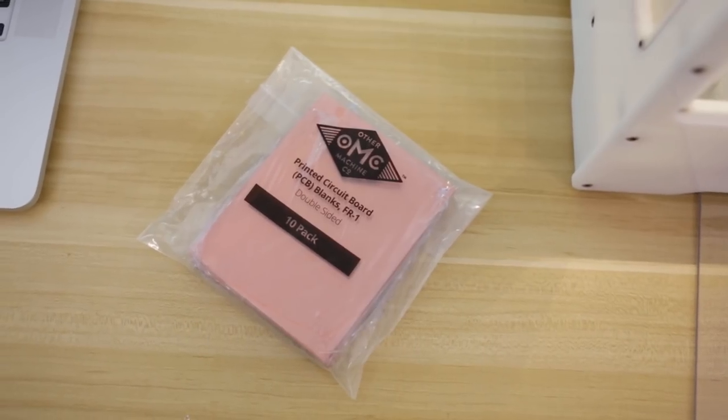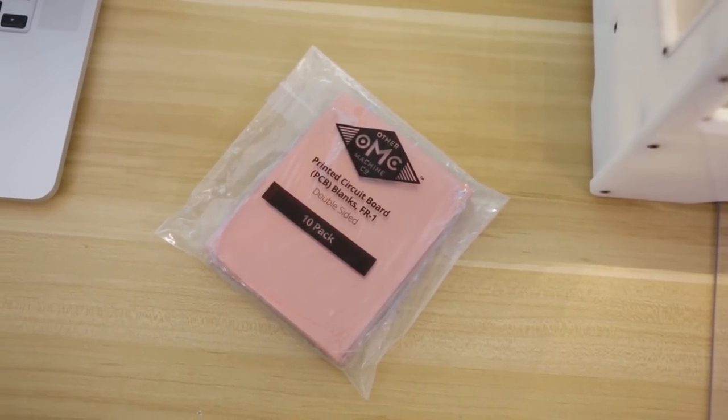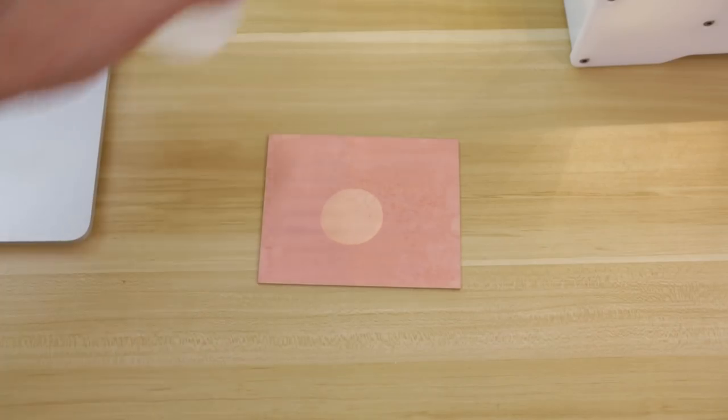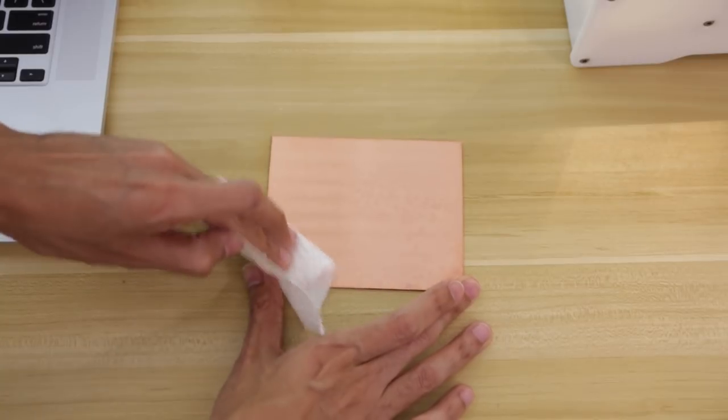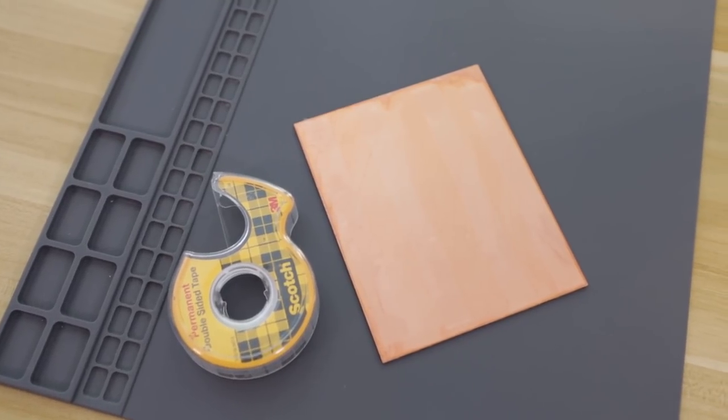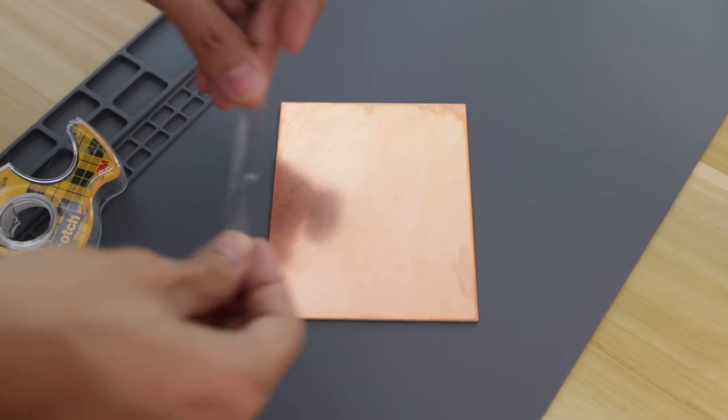These double sided FR1 boards from Bantam Tools are pre-cut so they fit nicely on the machine. Wiping them down with some alcohol and a paper towel will get rid of any grease and oils. I'm using double sided scotch tape to secure the PCBs to the spoil board.